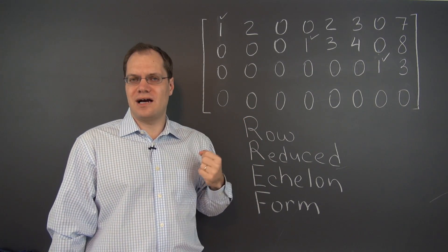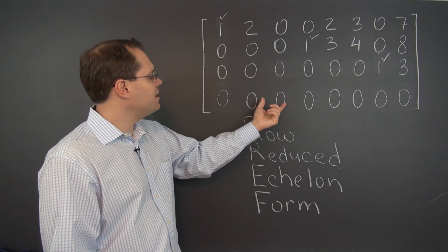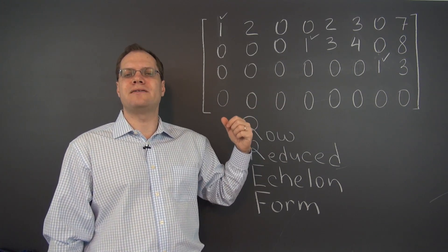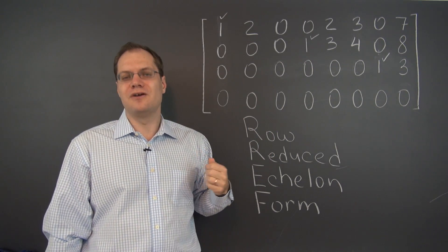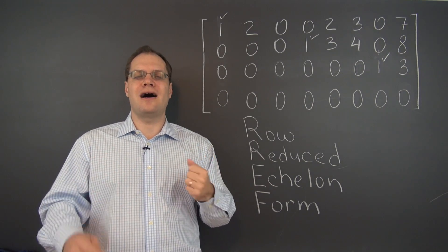So these columns, the pivot columns, are then necessarily linearly independent, and the remaining columns are linearly dependent on the pivot columns that came before them. So that's pretty much row reduced echelon form from the column point of view.